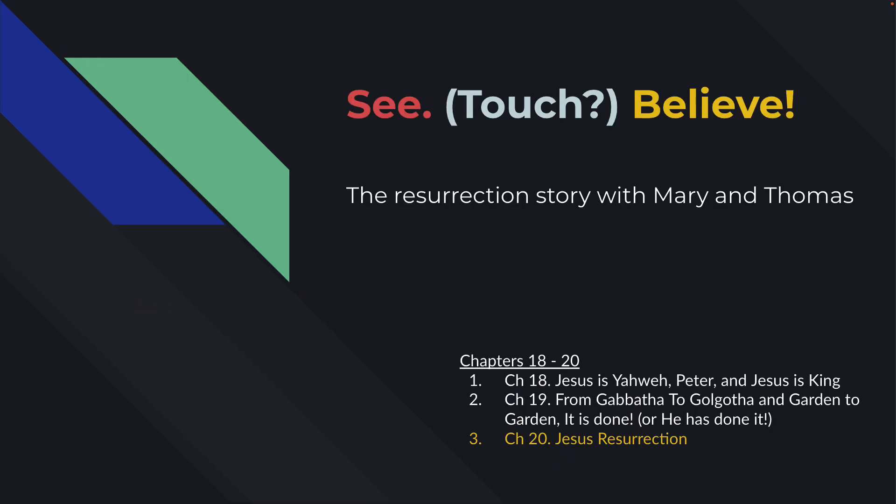This chapter could have many names — Resurrection, Stone Rolled Away, things like that. I kind of see the theme of this chapter as 'see and believe,' and there's also this thing about touch. There are two stories in here. You could break it into two halves: a story about Mary and a story about Thomas. You could also break each of those halves into two halves — the first half of Mary is just at the tomb, the second is Jesus and Mary. Then there are two appearances to the disciples, one without Thomas and one with Thomas.